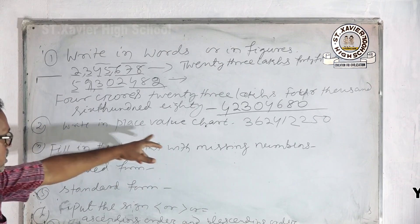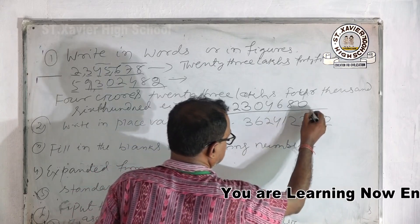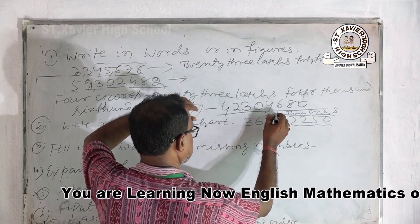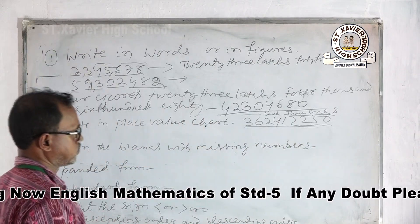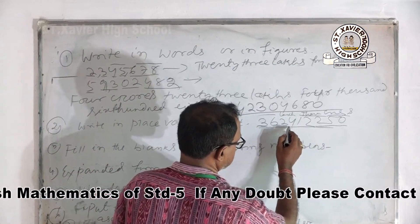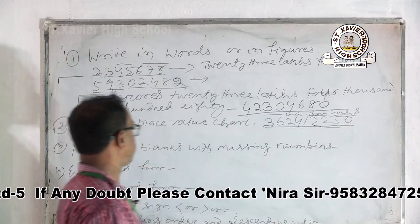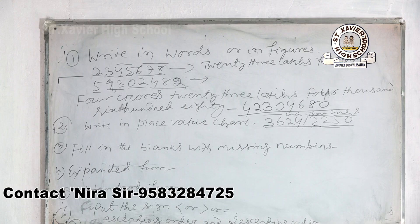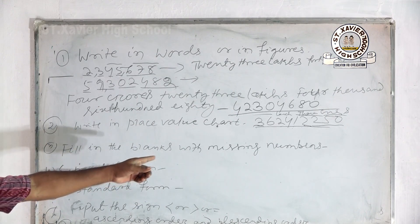You can also write the number in a place value chart. In the Indian way, the columns are: ones, thousands, lakhs, crores. For example, 36 crores, 24 lakhs, 12,250 in the Indian chart. In the international place value chart, that is 362 million, 412 thousand, 250.